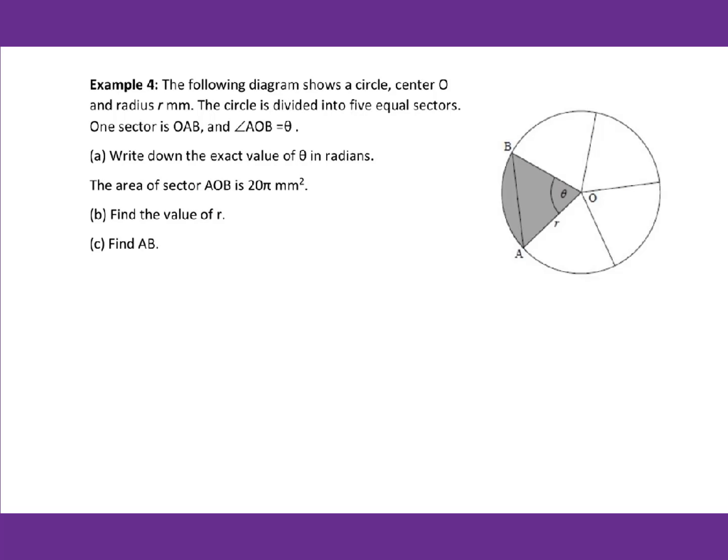Now go to last example. The following diagram shows a circle, center O and radius R. The circle is divided into five equal sectors. One sector is OAB and angle AOB equals theta. Write down the exact value of theta in radians. That will be 2π over 5.